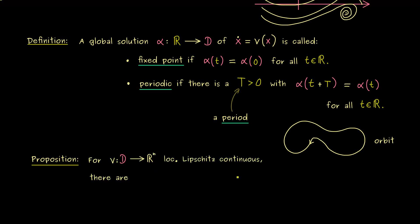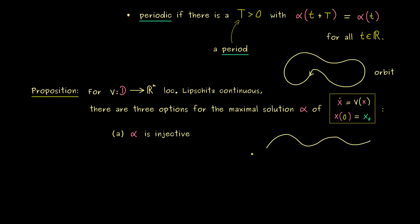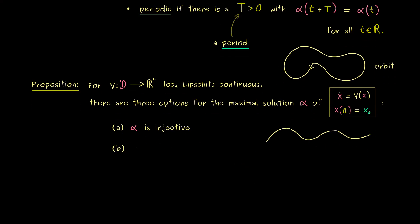So we take v as a locally Lipschitz continuous function and then we consider the initial value problem. We know the initial value problem has a unique maximal solution alpha. This means for a chosen point x0 in the domain we consider the solution that is at x0 at time 0. Please recall this is also how we have defined orbits in the last video. And therefore we can also use what we have learned about the orbits. We know two orbits cannot cross so we can have the case that alpha is injective. So this means alpha does not hit a point in D more than once. However we have also already discussed that this actually can happen. Namely exactly in the case that alpha is a periodic solution or a fixed point. And this is important to remember because these are all the cases we can have for solutions.